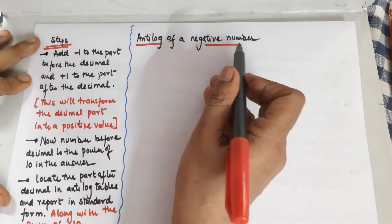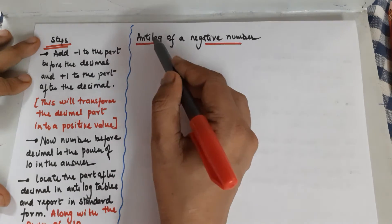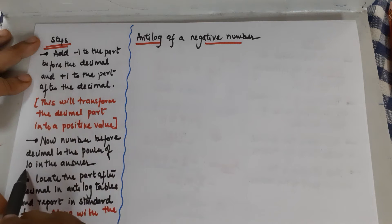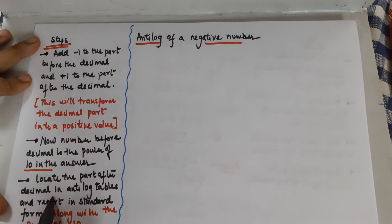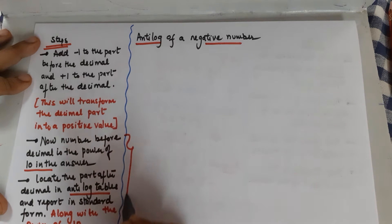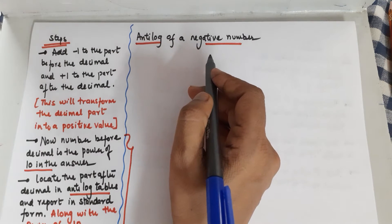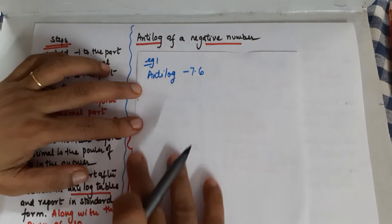When you have to find the value of antilog for a negative number, the method is the same as far as antilog is concerned. The number before the decimal is the power of 10, as we did in the last class on antilog. Locate the part after the decimal in the antilog table and then report it in standard form. This part is exactly the same as we do for antilogs. The difference you will understand only with the help of an example, so let's begin.